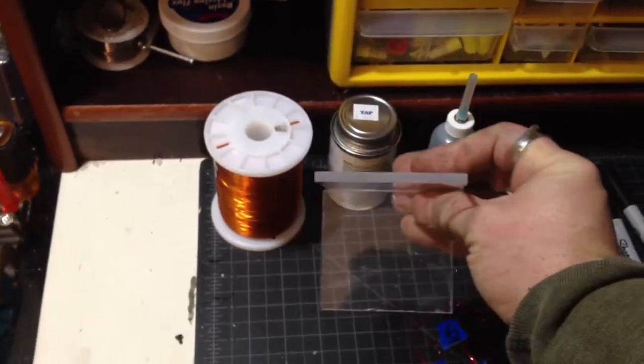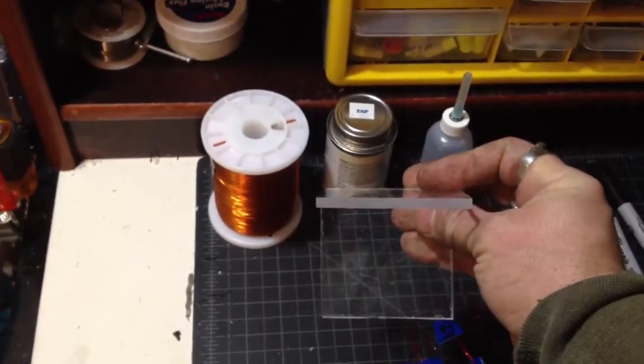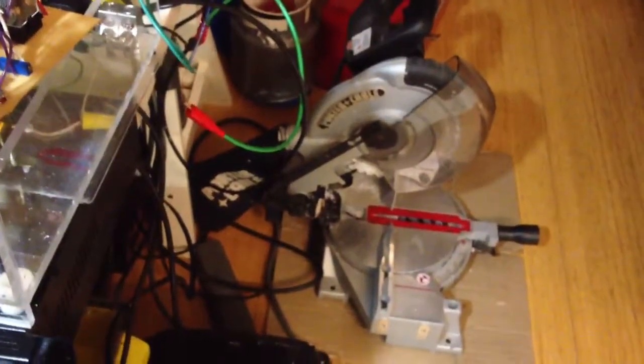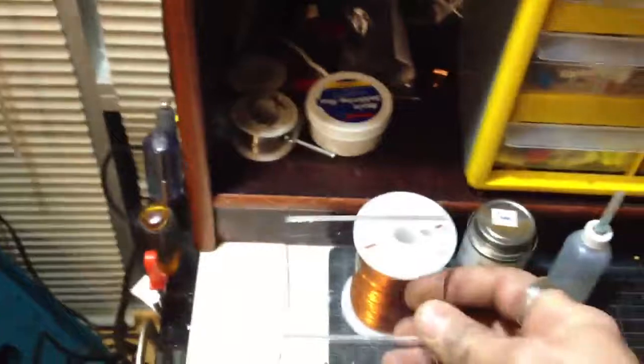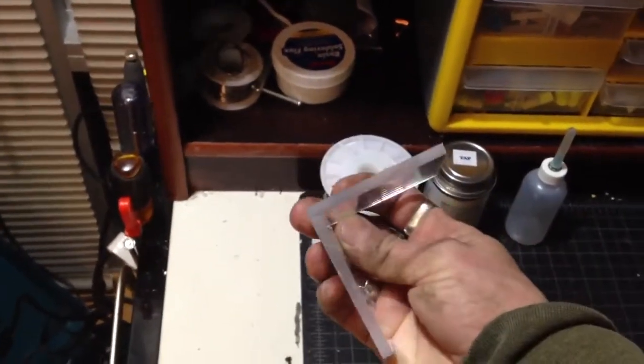I think Ace also sells it or Home Depot. This is quarter inch thick, cut it with a chop saw. Make sure it's a fine tooth blade, otherwise it could make the edges real rough. But if you get a nice blade you'll make nice cuts.